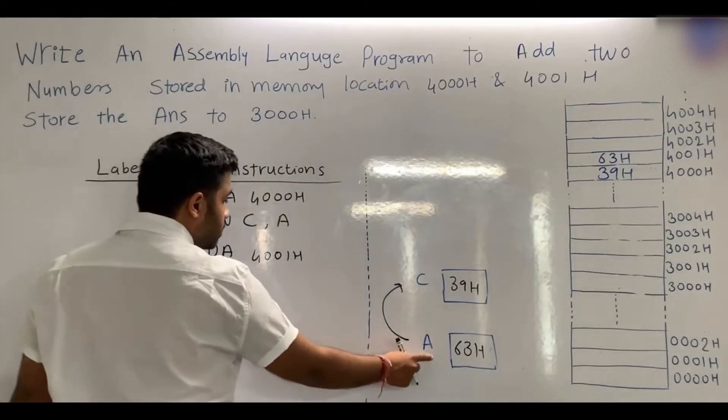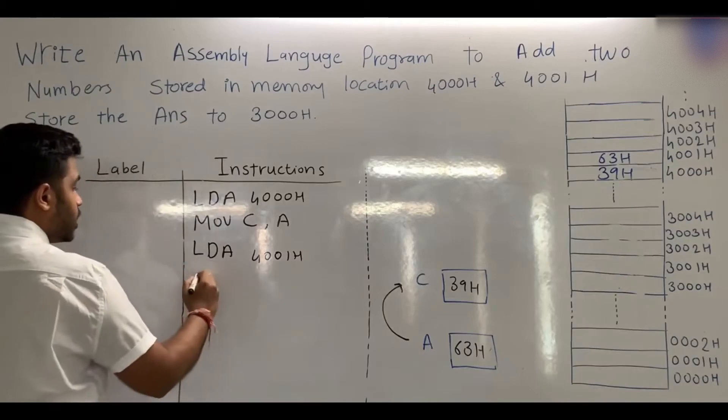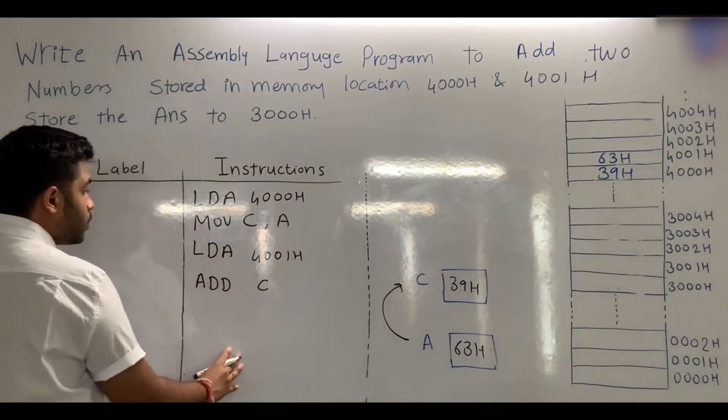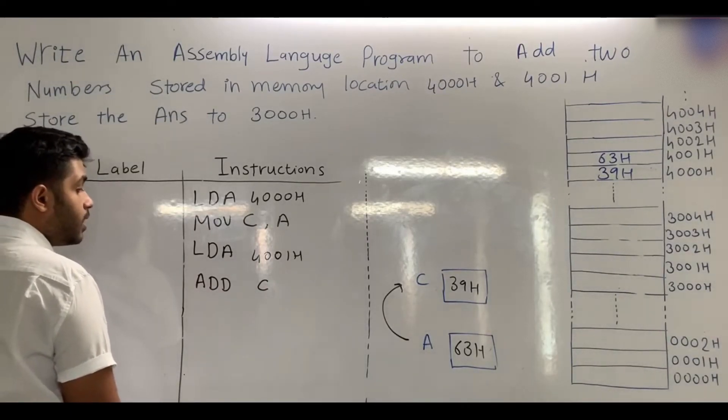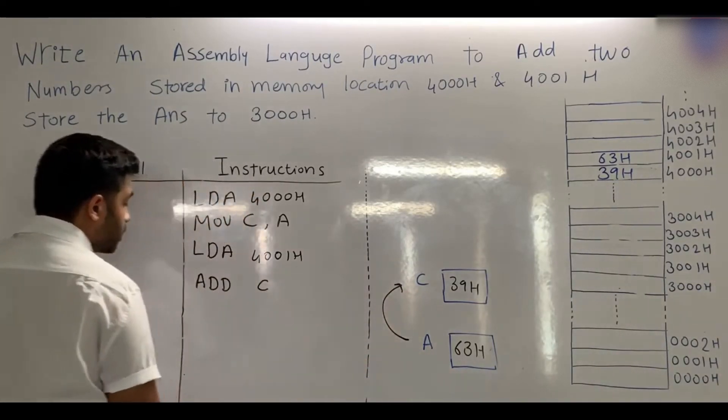In the accumulator, one data is present; in register C, the second data is present. We will use the instruction ADD C. ADD C means add the content of register C with the accumulator, and the answer will be stored in the accumulator. When we perform ADD C, we will get the answer.